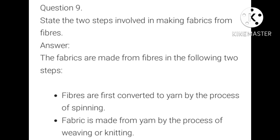State the two steps involved in making fabrics from fiber. Fibers are first converted to yarn by the process of spinning. Then fabric is made from yarn by the process of knitting or weaving. So the first process is spinning and the second process is knitting or weaving. These are the two steps involved in making fabrics from fibers. Thank you for listening.